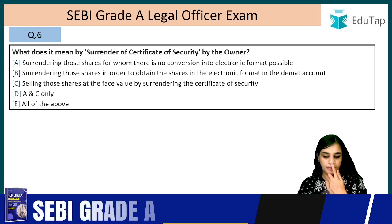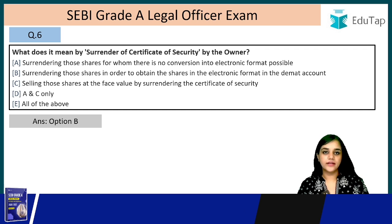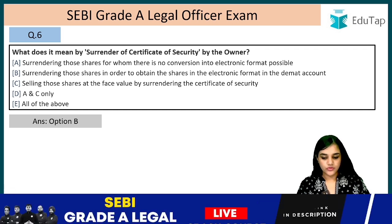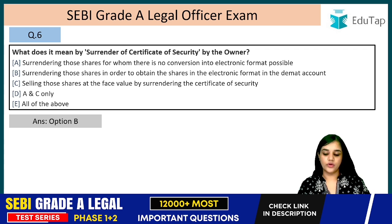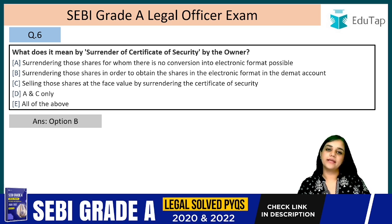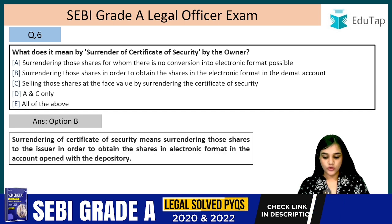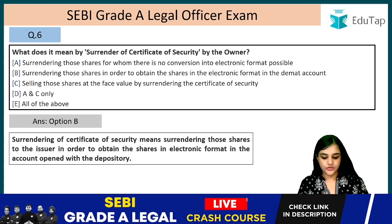Question 6: What does it mean by surrender of certificate of security by the owner? The answer is option B. Surrendering of certificate of security means surrendering those shares to the issuer in order to obtain the shares in electronic format in the account opened with the depository — that is, the DMAT account.